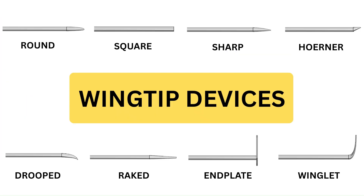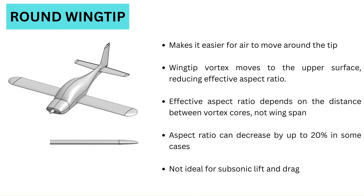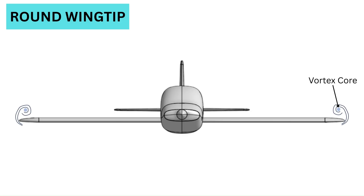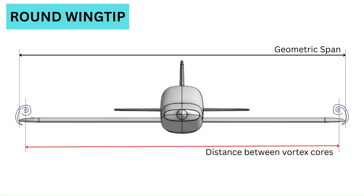Let's look at the most common wingtip designs one by one. Round wingtip: while it looks streamlined, this type of wingtip makes it easier for air to flow around the tip. Horner demonstrated that it is less effective than once thought, as the wingtip vortex tends to move onto the upper surface and thus reduces the effective aspect ratio.